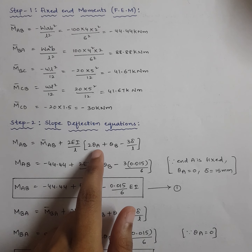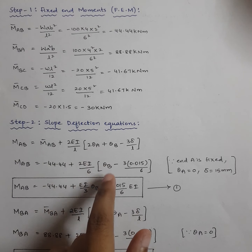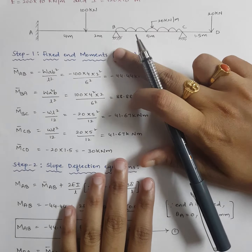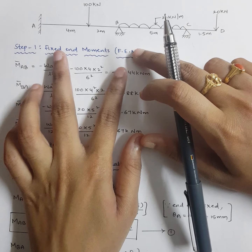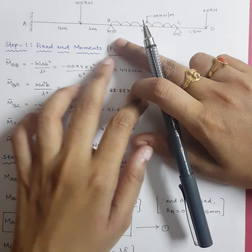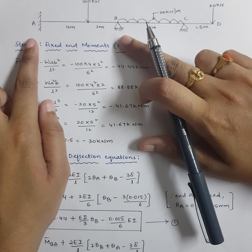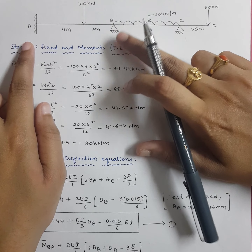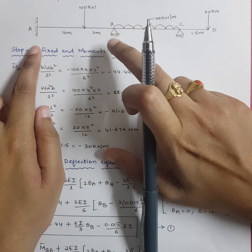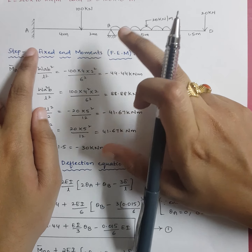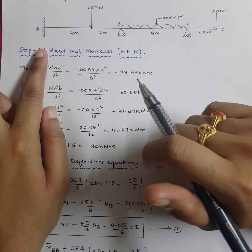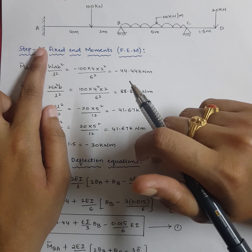When you are doing span AB, support B is on the right-hand side. The sign convention is: when you are considering any span, if the sinking support is on the right-hand side, directly substitute the given displacement. The displacement was given as 15 mm, so convert to meters: 0.015 m. Substitute that value in place of delta.